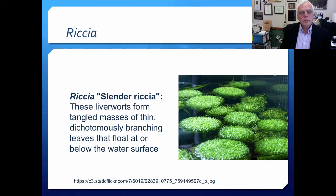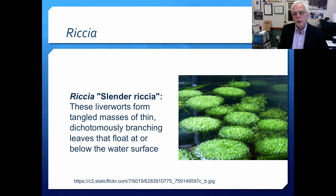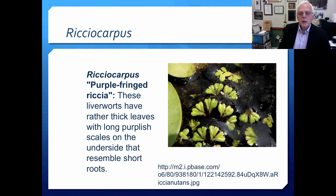There's Riccia and Ricciocarpos. This is Riccia — you can see it kind of forms mats in aquatic systems; this is in a laboratory setting. This is the slender Riccia. These liverworts form tangled masses of thin, dichotomously branching leaves that float at or below the water surface. And another one, Ricciocarpos — this is purple fringe Riccia. These liverworts have pretty thick leaves with long purplish scales on the underside that resemble short roots.